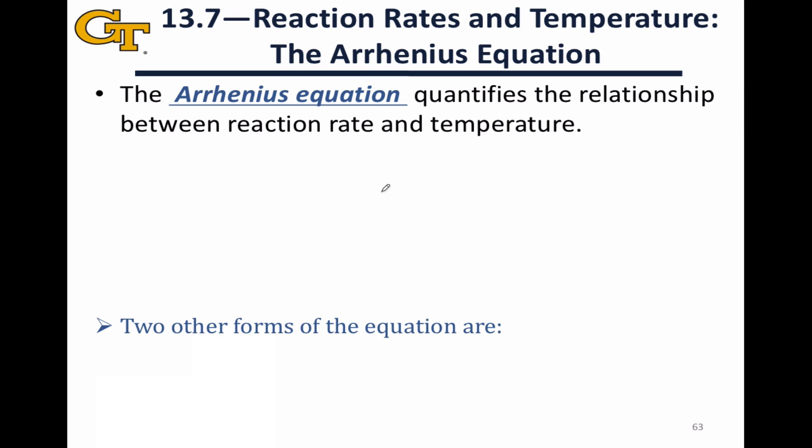The Arrhenius equation expresses a mathematical relationship between two variables: the rate of a chemical reaction and the temperature at which the reaction is occurring.